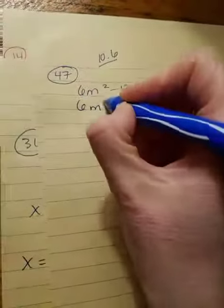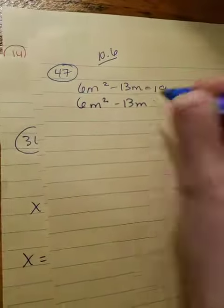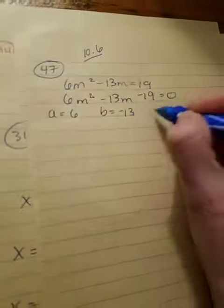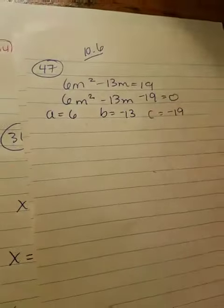So remember, to do quadratic formula, you want to get everything to one side, so I subtract the 19. So your a is 6, your b is negative 13, and your c is negative 19.